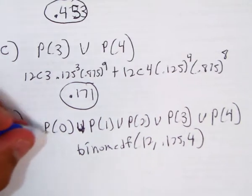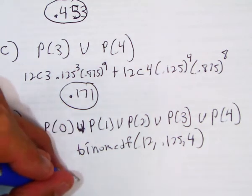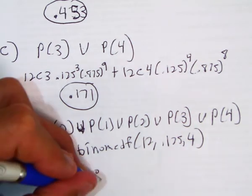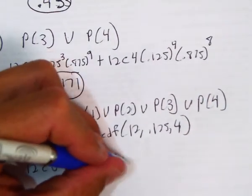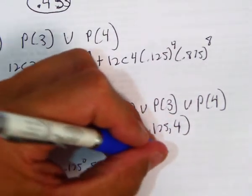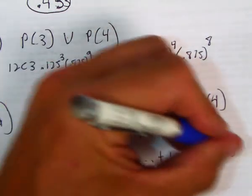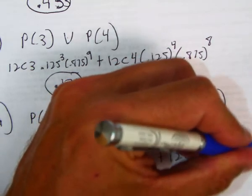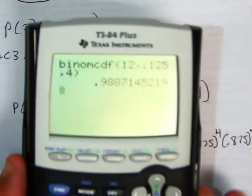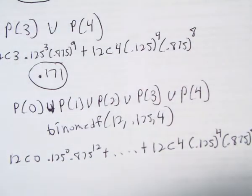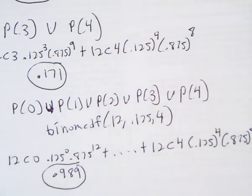Now we want to put some kind of nomenclature here. So we're going to say, okay, we're going to do 12 choose zero, 0.125 to the zero, 0.875 to the twelfth. Plus dot, dot, dot. I'm going to go 12 choose four, 0.125 to the fourth, 0.875 to the eighth. All right. That's what I would put down for nomenclature. And then I did it in the calculator. It's 0.989 is the answer.